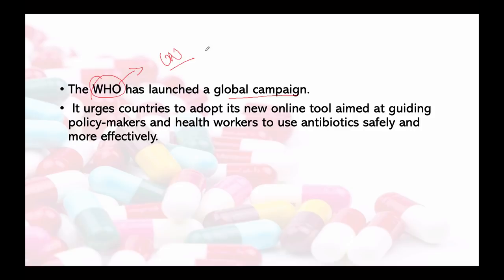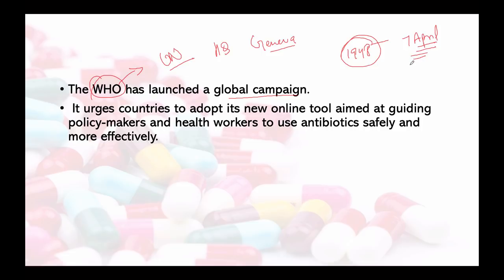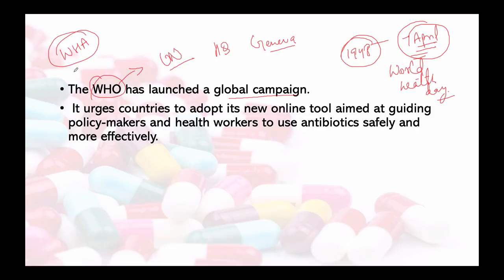The headquarters of WHO are in Geneva, Switzerland. It has been in function since 1948. You know World Health Day is associated with WHO. The World Health Assembly is the supreme decision-making body of WHO — it takes all major decisions. This assembly meets annually and its delegation includes 194 member states.